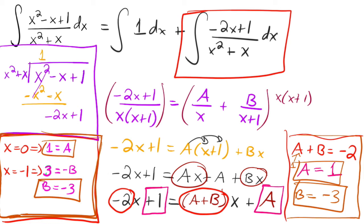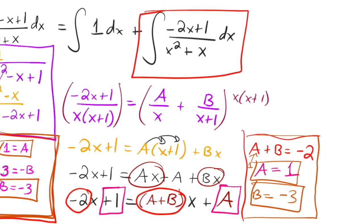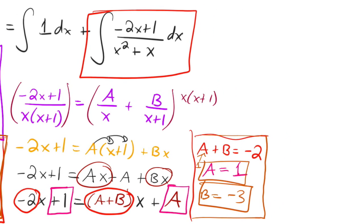Anyways, we've got our coefficients. a is one and b is negative three. So let's rewrite this. So this is equal to, this is equal to the integral of 1 dx. And then plus I'm going to write this one in red. So, a over x or 1 over x. This is going to be the integral of 1 over x. So that's this one.